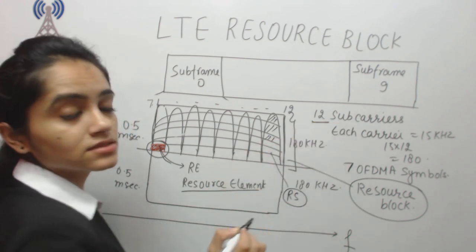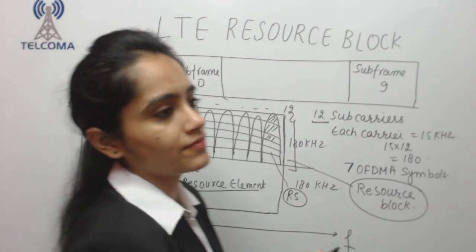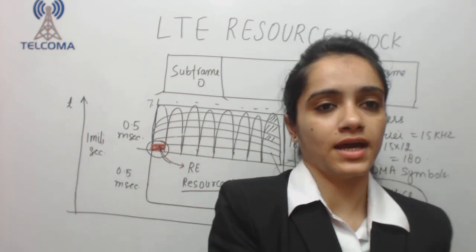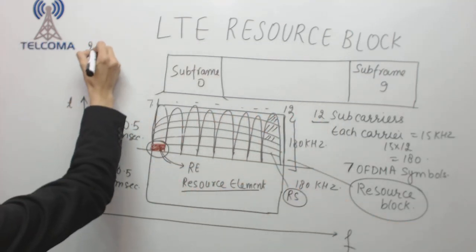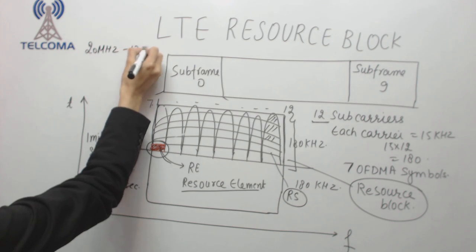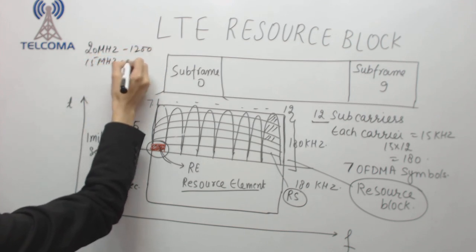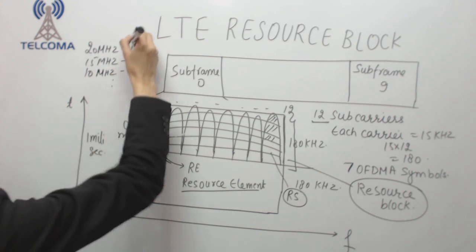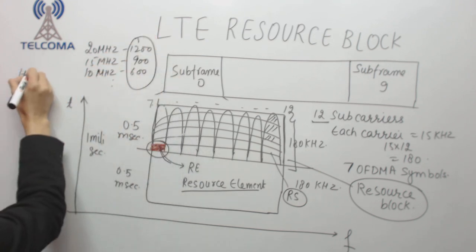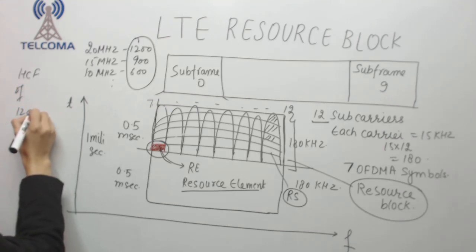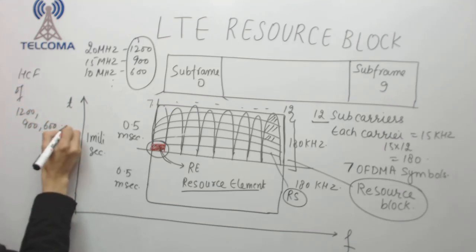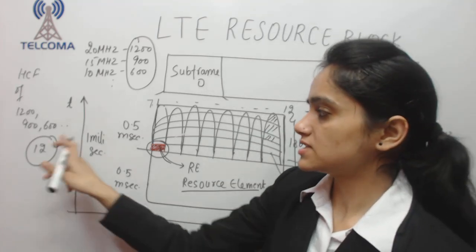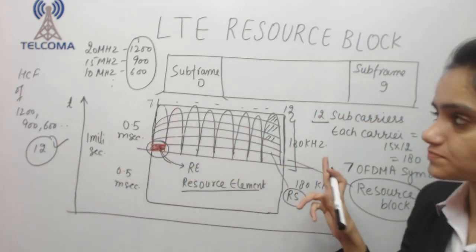Now the question is: why do we have 12 sub-carriers? As discussed in the last class, in 20 MHz bandwidth we have 1200 sub-carriers, in 15 MHz we have 900, in 10 MHz we have 600, and so on. Taking the HCF of 1200, 900, 600, and so on, the common factor is 12. Since we require equal divisions across every bandwidth, we divide into groups of 12 sub-carriers.